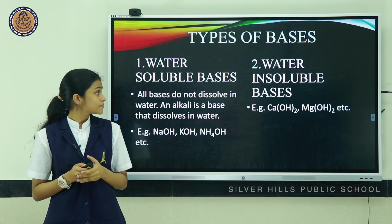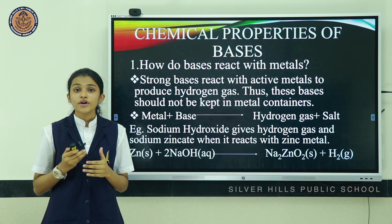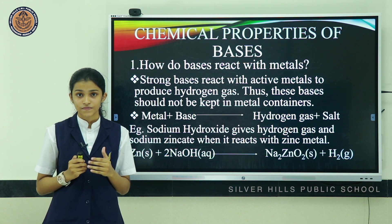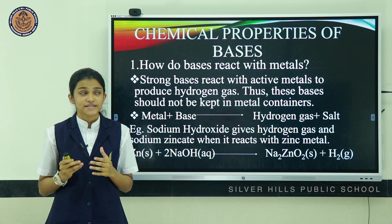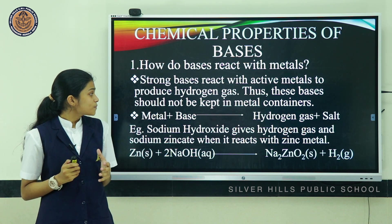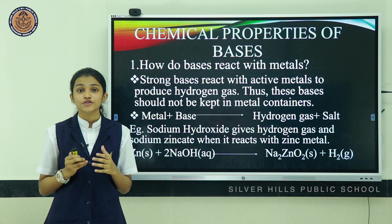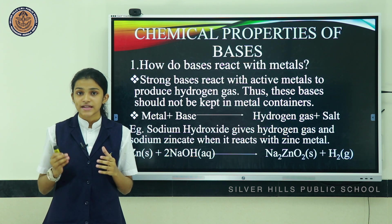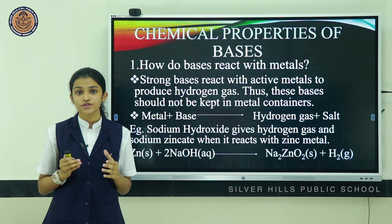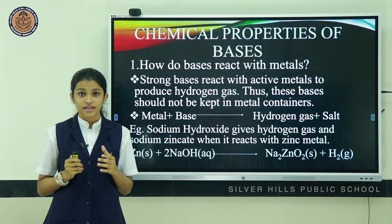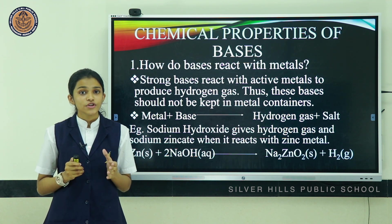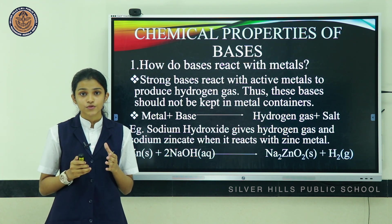Examples of water-insoluble bases are calcium hydroxide and magnesium hydroxide. Regarding the chemical properties of bases — strong bases react with active metals to produce hydrogen gas. That is, a base reacts with a metal to produce hydrogen gas and a corresponding salt. Thus, these bases should not be stored in metal containers.